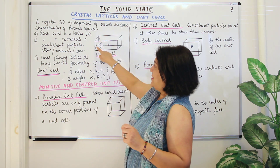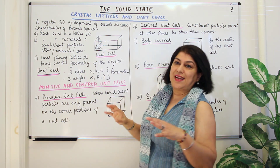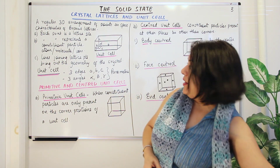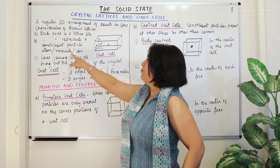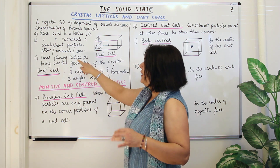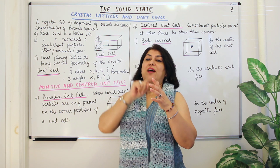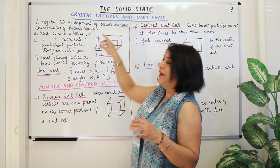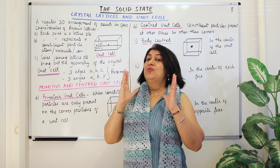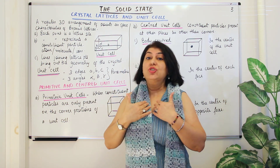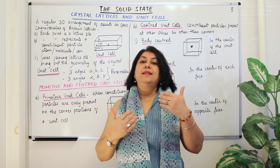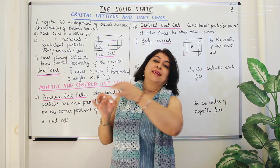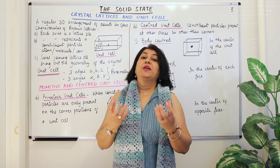Each point in the lattice is a lattice site. The entire three-dimensional arrangement has each point representing a particle — which may be an atom, molecule, or ion. The lines joining the lattice points only bring out the geometry: if the lines form a cube it is a cubic arrangement, if a cuboid it is a cuboidal arrangement. These lines do not exist in actual crystals; they are imaginary lines joining the lattice sites to show the geometry of the unit cell.